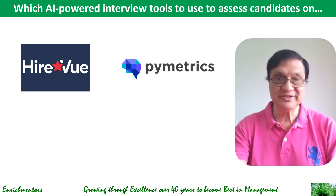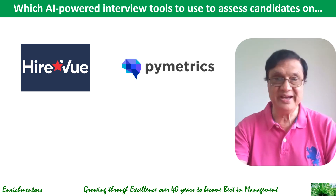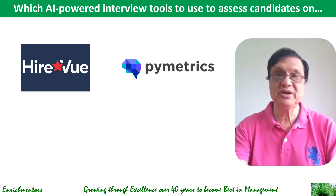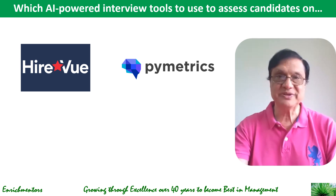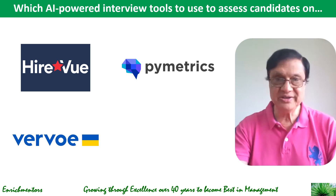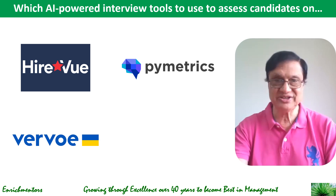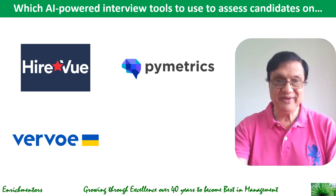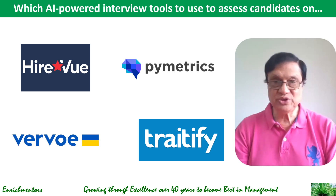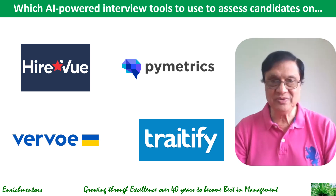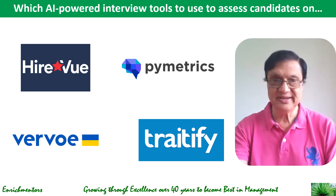The second tool is Pymetrics, which uses neuroscience-based games and assessments to evaluate cognitive and emotional traits, helping identify candidates with the right cognitive and emotional attributes for a specific job. The third is Vervo, which allows you to create skills assessments and simulations that include both verbal and non-verbal communication components, providing insights into how candidates will perform in real-world scenarios. The fourth is Stratify, which uses visual assessments to measure personality traits and emotional intelligence, offering a quick and engaging way for candidates to showcase their soft skills.